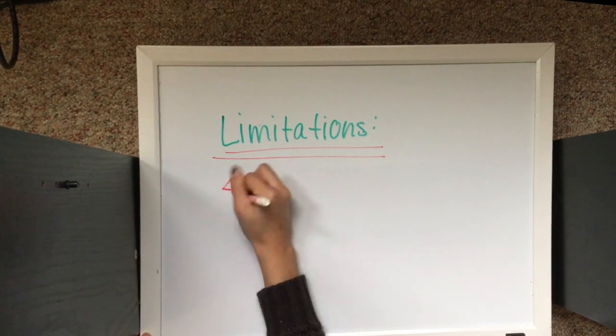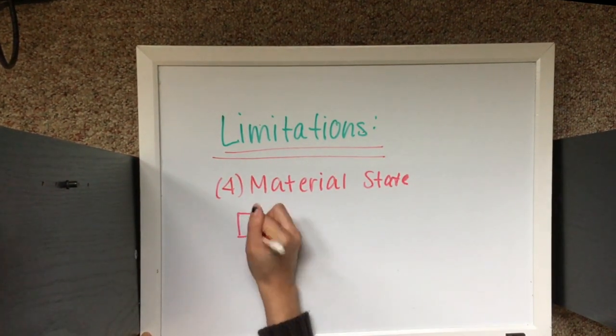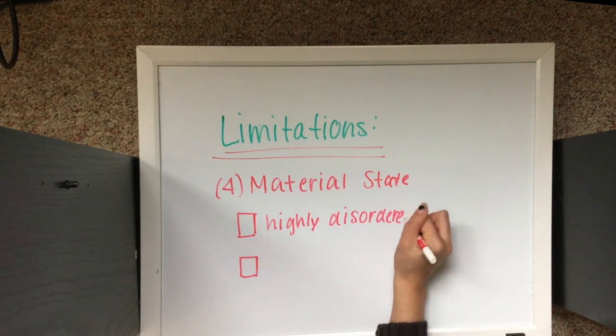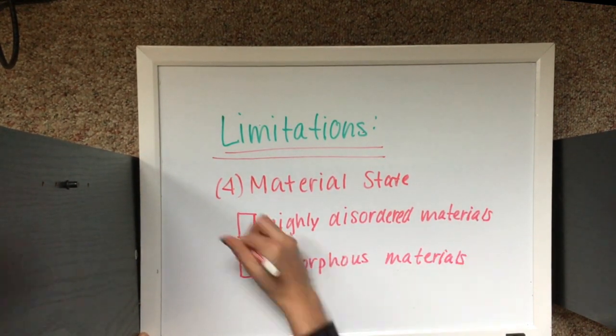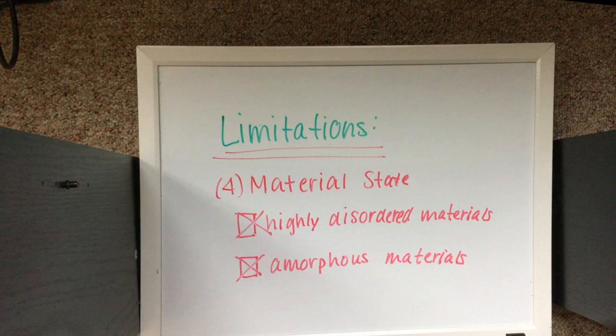Lastly, the material state is very important. As the degree of order decreases within the diffraction interaction volume, so does the pattern quality. Therefore, deformed materials produce more diffuse patterns. Amorphous materials will produce no pattern whatsoever.